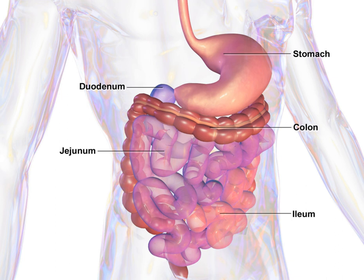The gut is an endoderm-derived structure. At approximately the sixteenth day of human development, the embryo begins to fold ventrally in two directions: the sides of the embryo fold in on each other and the head and tail fold toward one another. The result is that a piece of the yolk sac, an endoderm-lined structure in contact with the ventral aspect of the embryo, begins to be pinched off to become the primitive gut. The yolk sac remains connected to the gut tube via the vitelline duct. Usually this structure regresses during development; in cases where it does not, it is known as Meckel's diverticulum.